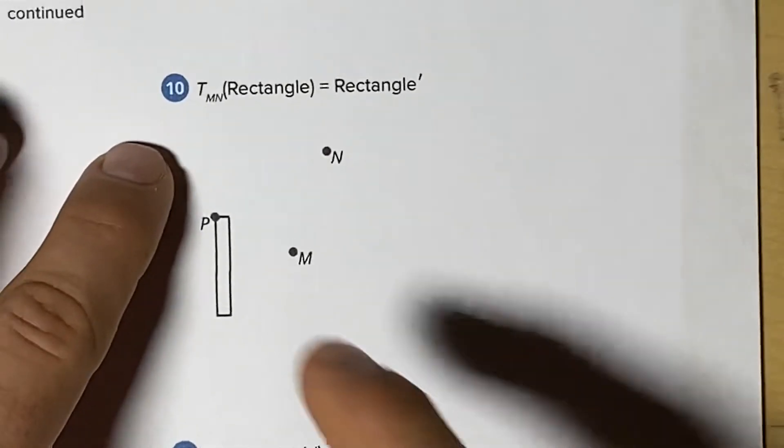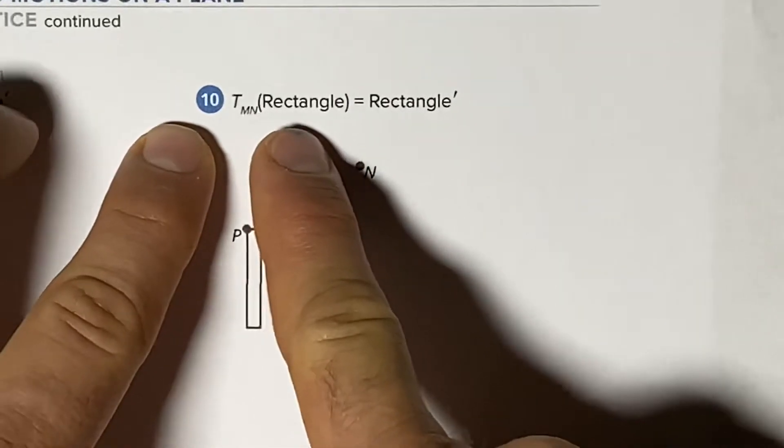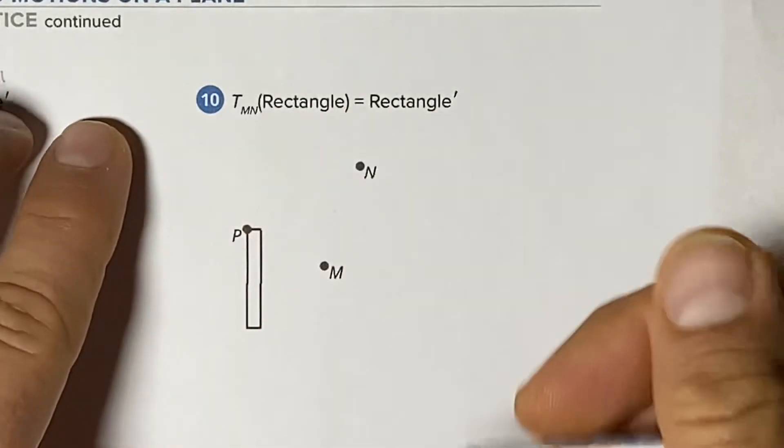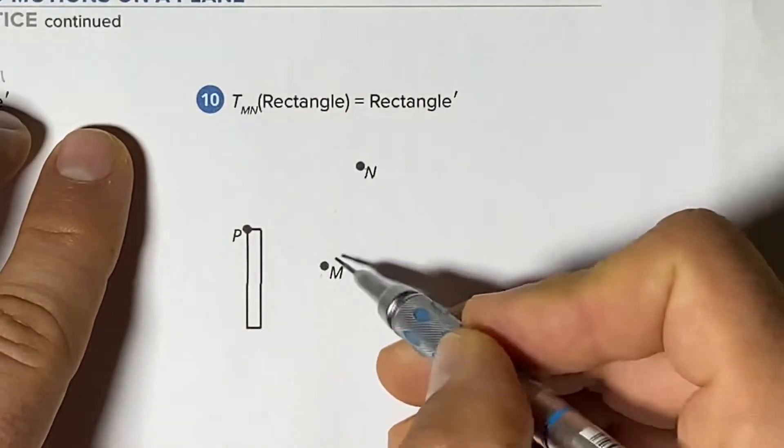So here's another translation. We're translating a rectangle from M to N, from M towards N, this direction.